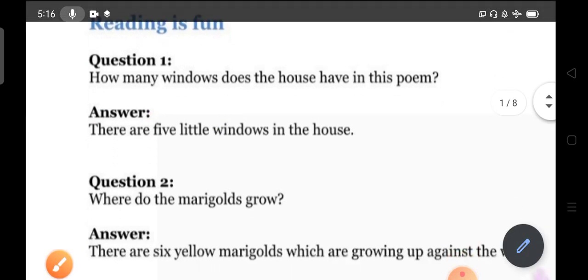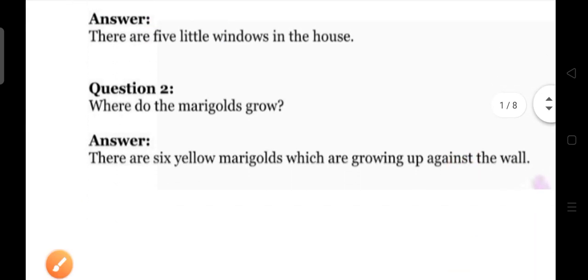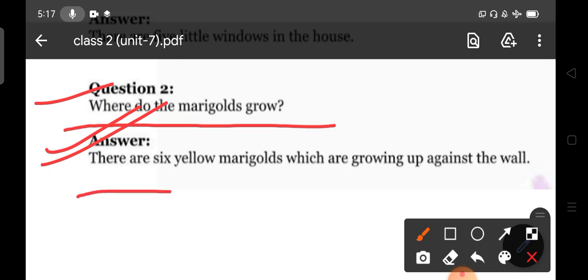So, now the next question. Where do the marigolds grow? Where do the marigolds grow? So, now your answer is that there are six yellow marigolds which are growing up against the wall.